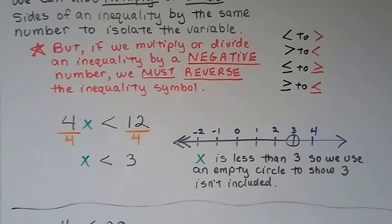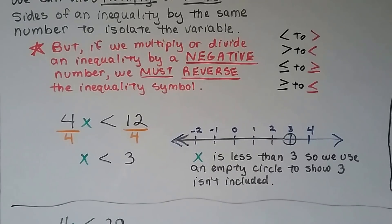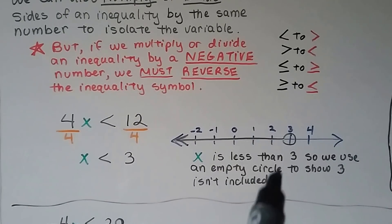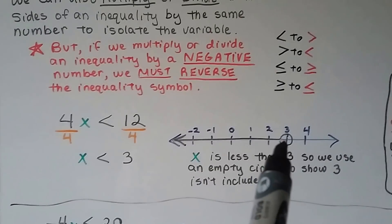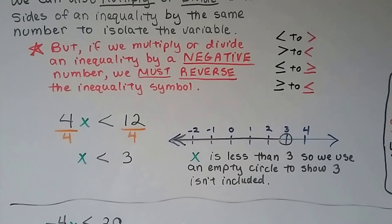x is less than 3. So we use an empty circle to show 3 isn't included because it's got to be less than 3. So it would be 2.9999, really close to 3, but not 3, and then any number smaller.